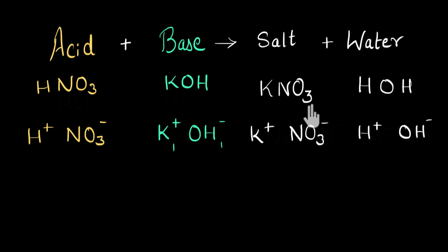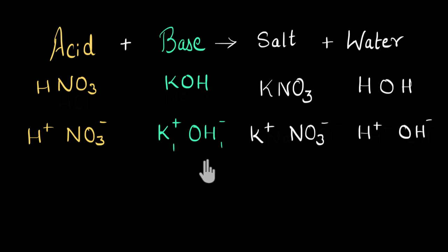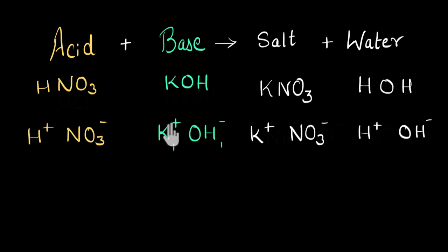So if you are given a salt and have to find the acid and base that can make it, break the salt into its ions and exchange these ions with the ions of water. You will get the ions of the acid and base, and from there you can build the chemical formula of the acid and base by exchanging the charges.